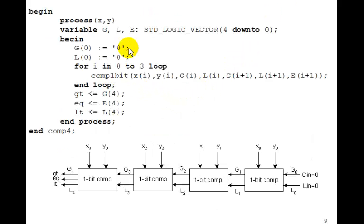Well then, in the main part of the architecture, we have a process x, y. This is the inputs: x3, x2, x1, x0, y3, y2, y1, y0. And we'll define variables g, l, and e, 4 down to 0.